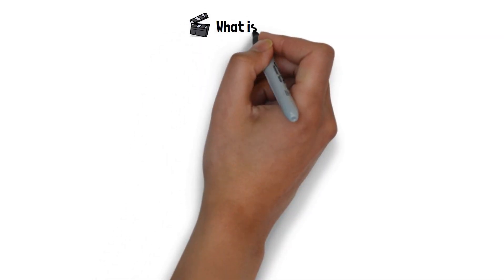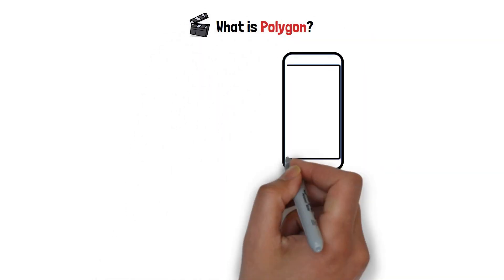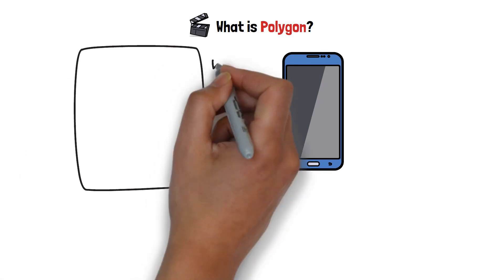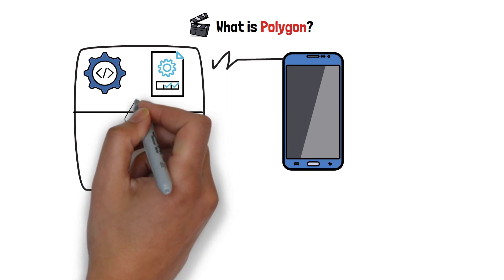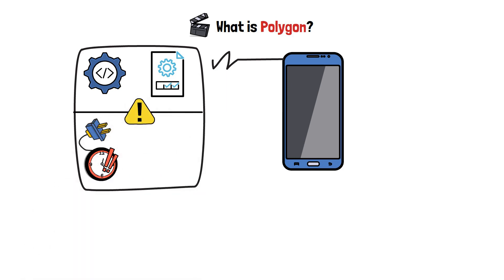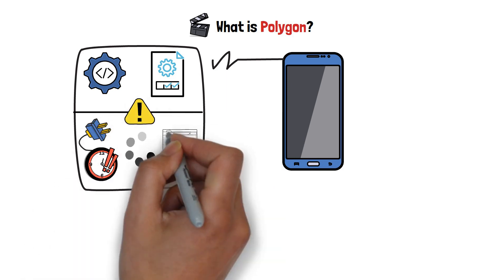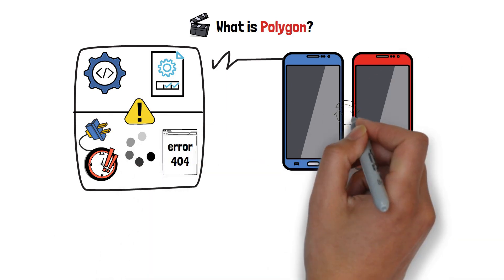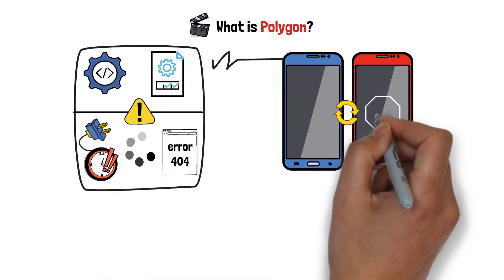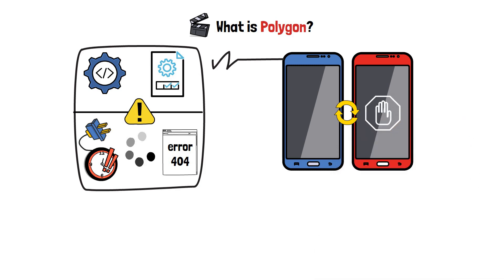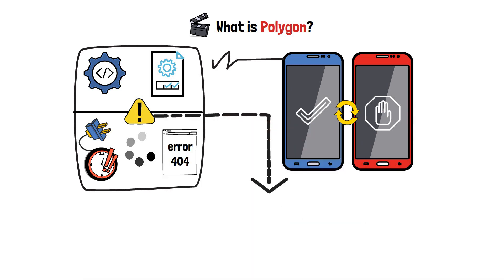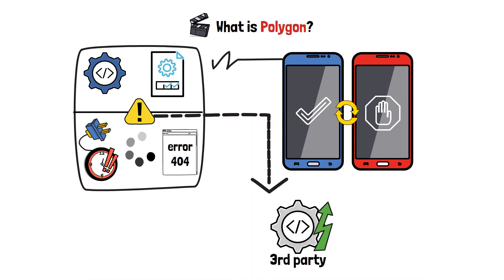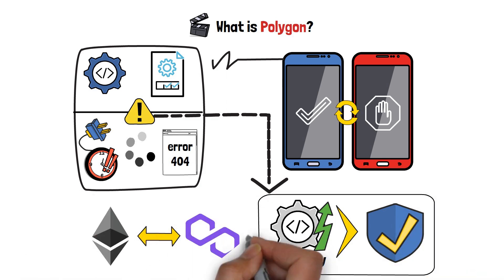Hey! In this video, I'm going to tell you what is Polygon in crypto. Imagine that you've bought a new phone. After you start using it, you notice that while it's super modern and supports all of the latest apps, it has a lot of issues. The battery runs out very fast, everything's slow to load, and the apps glitch out every once in a while. You could change your phone, but then you wouldn't be able to use many of the most popular applications that all of your friends are using, since only this phone supports them. However, there's an alternative — a third-party update that would allow your phone to resolve many of these issues. In essence, this is the relationship between Ethereum and Polygon.